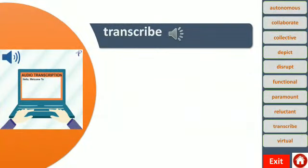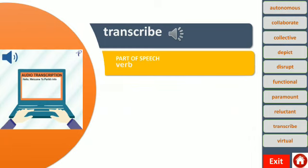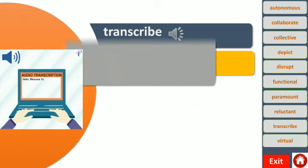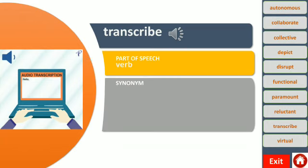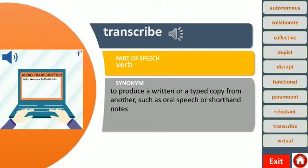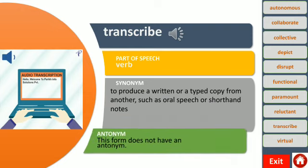Here you can find the word transcribe. This word functions as a verb, which means it expresses an action. It means to produce a written or typed copy from another, such as oral speech or shorthand notes. For example, the senator's speech was transcribed as a newspaper article. This form doesn't have an antonym.